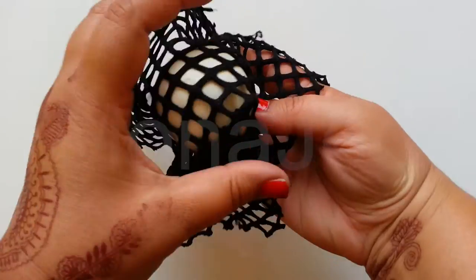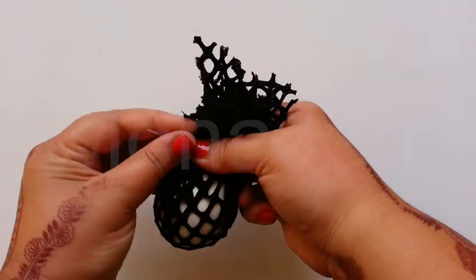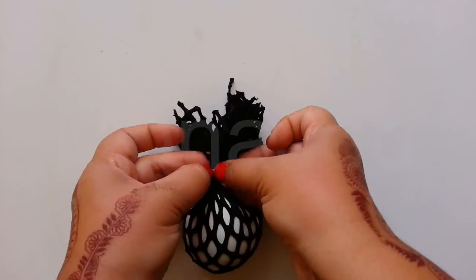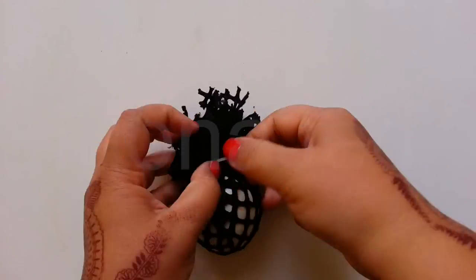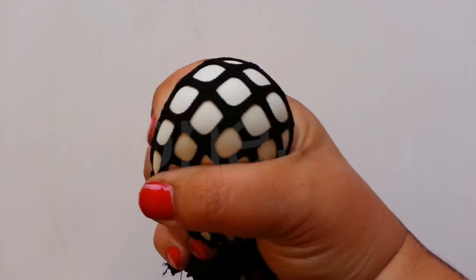To turn the stress ball into a mesh stress ball, take the mesh net and cover the balloon. Use a zip tie to secure the netting. This gives it a really cool look. Every time you squeeze the stress ball, a little bit of it pops through the netting and it's always fun to see. The plain stress ball before turns into a handful of fun rubbery grapes.